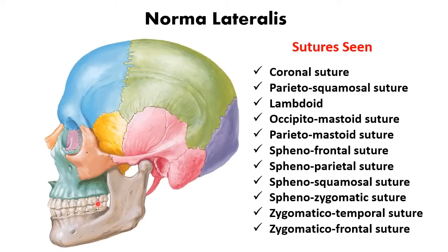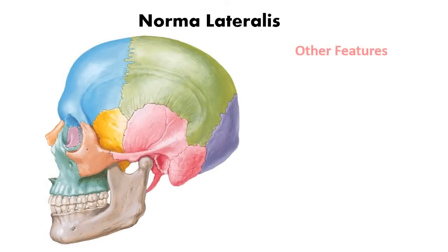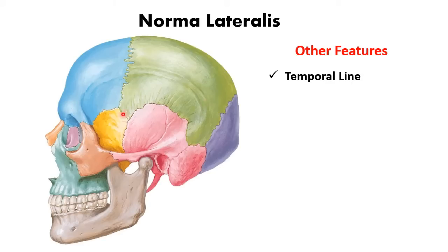Next, we have to trace the temporal lines. Two lines are seen on the lateral aspect: the superior temporal line and the inferior temporal line. The superior temporal line fades out in the posterior part, but the inferior temporal line continues as the supramastoid crest. Initially these two lines are combined but later they separate from each other.